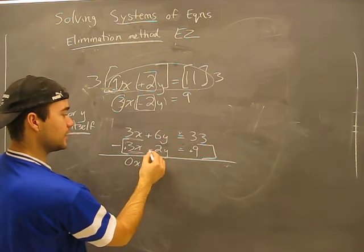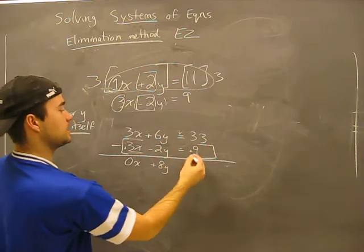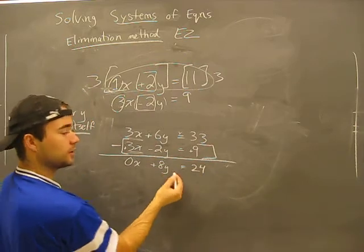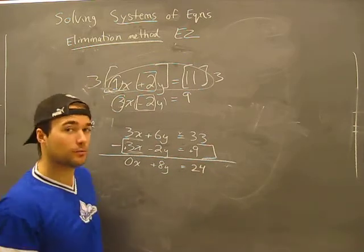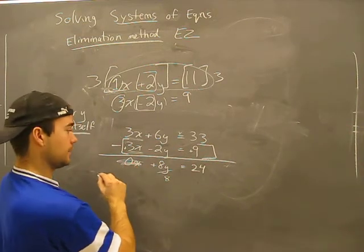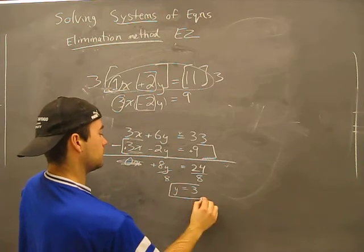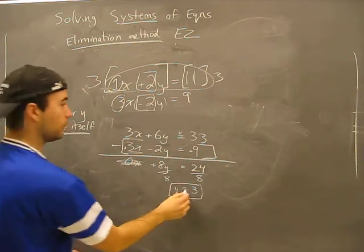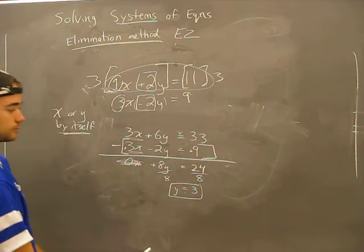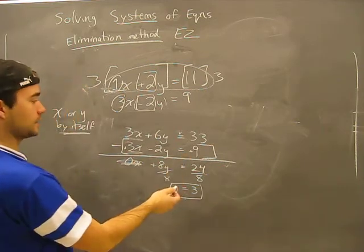6y minus negative 2y is a positive 8y. 33 minus a positive 9 is 24. And then all I have to do is solve, which is something we've done before. Solve for y. This is out of the picture now, we've eliminated it. Y equals 3. So right off the bat we've solved and found that y equals 3.